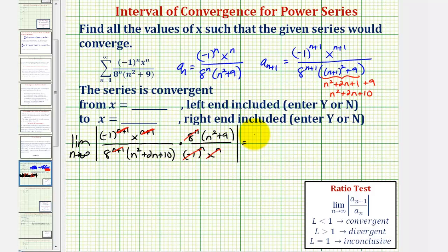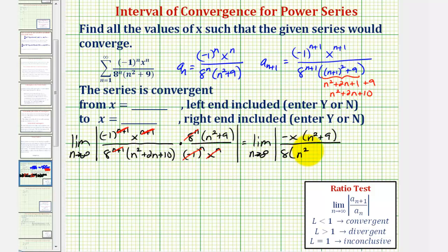So now we have the limit as n approaches infinity of the absolute value of negative x times the quantity n squared plus nine, divided by eight times the quantity n squared plus two n plus ten. Looking at this limit, notice how in terms of n we have degree two in the numerator and degree two in the denominator.